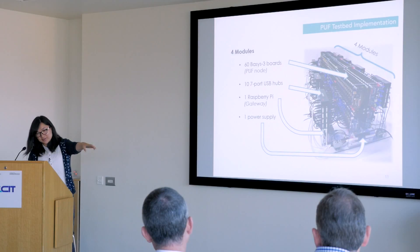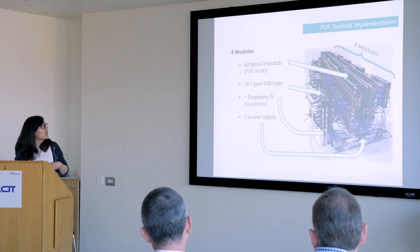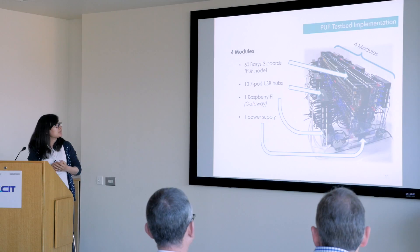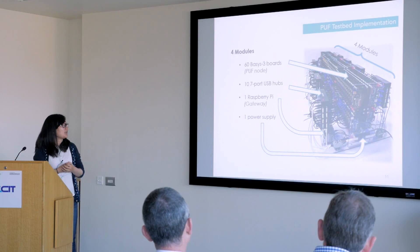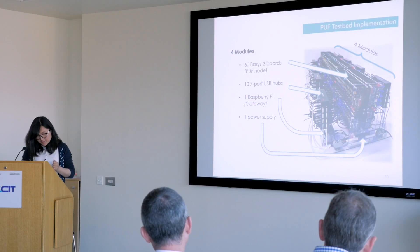This is the practical module diagram. We have four modules to implement 234 PUF nodes. For each module, we have up to 60 Basys 3 boards, 10 hubs, one Raspberry Pi, and one power supply. The shape and size is designed to be suitable for temperature testing — we put the modules into an oven chamber for temperature tests.